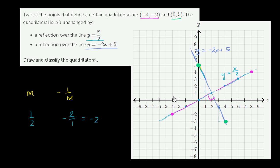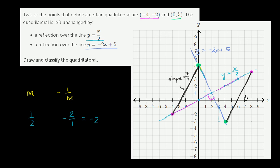Now we have the four points of this quadrilateral. Let me draw it. We can verify that two of the sides are parallel because they have the same slope. Going from one point to another, the run is 4 and the rise is 7, so the slope is 7 fourths. For the opposite side, the run is also 4 and the rise is also 7, giving slope 7 over 4 as well. So these two lines are parallel.